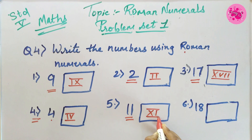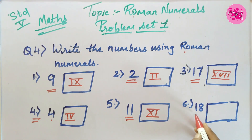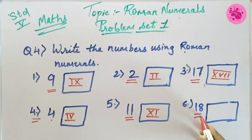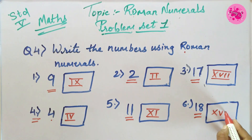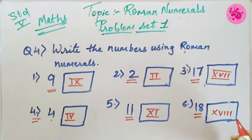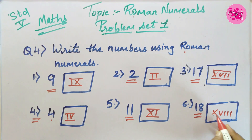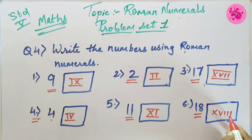Number 6: The number 18 is given. So the answer is X plus V plus I plus I plus I, that is XVIII (X, V and III).